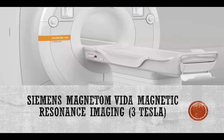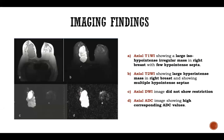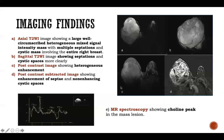This is the machine used for my study. Regarding imaging findings of one case: Image A is an axial T1-weighted image showing a large iso- to hypointense irregular mass in the right breast with few hypointense septa. Image B is the axial T2-weighted image showing a large hyperintense mass in the right breast with multiple hypointense septa. Images C and D are axial diffusion-weighted images not showing any diffusion restriction, and the ADC image shows high corresponding ADC values.